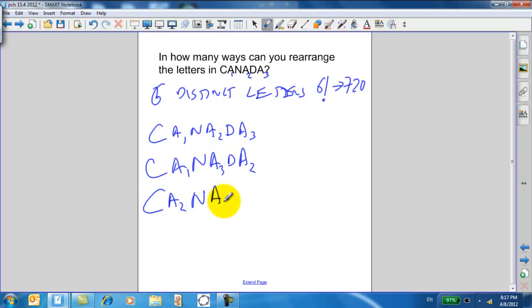A2, N, A3, DA1, or C, A2, N, A2, DA1, or C, A3, DA2, NA2, DA1. So basically, there are six possibilities in here.